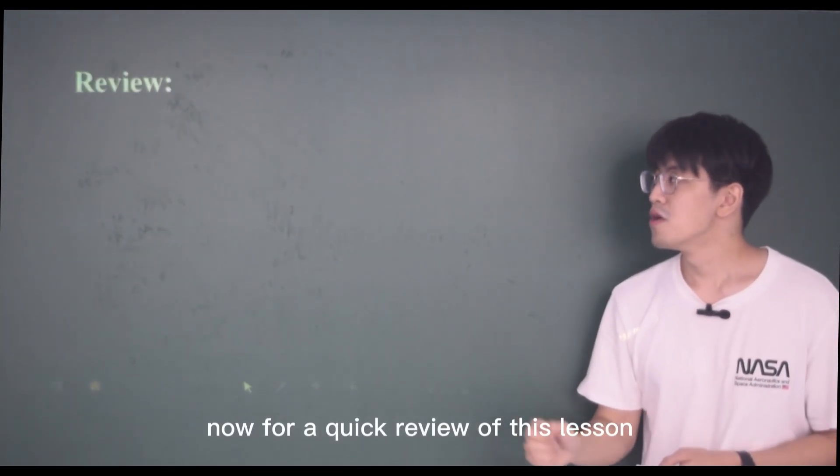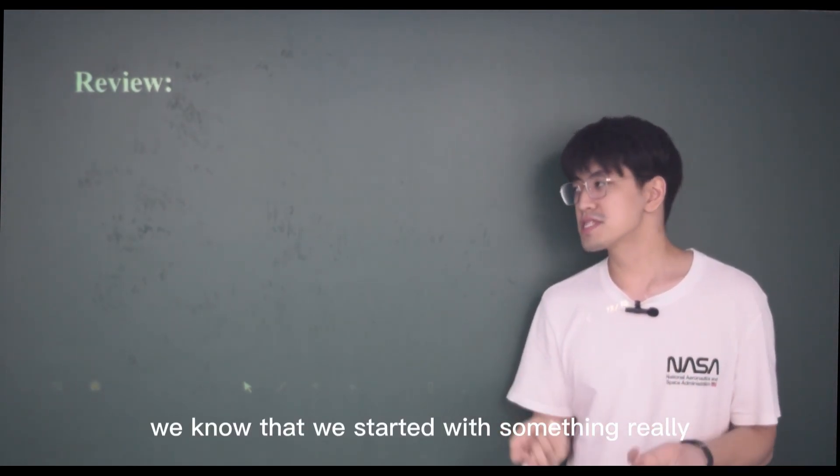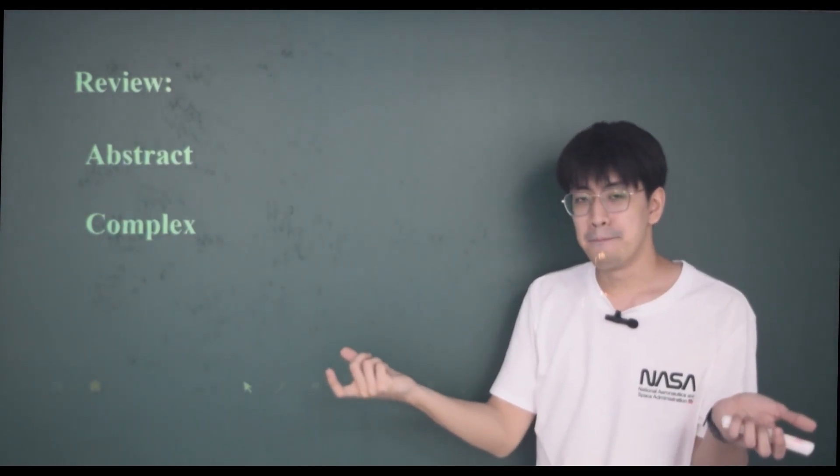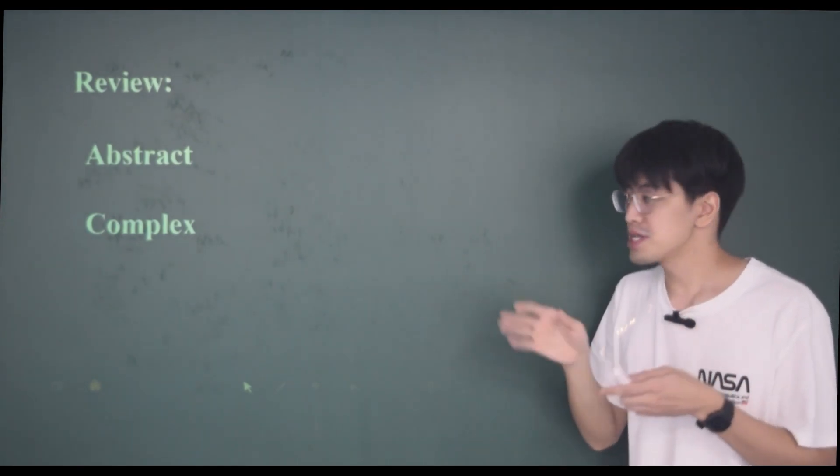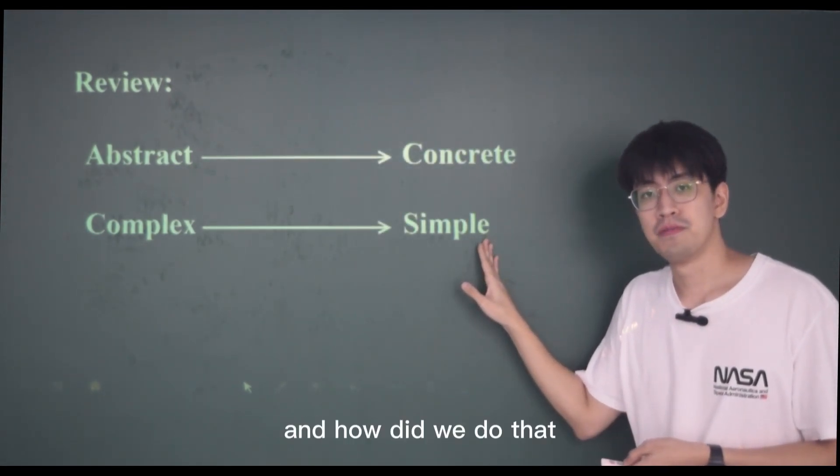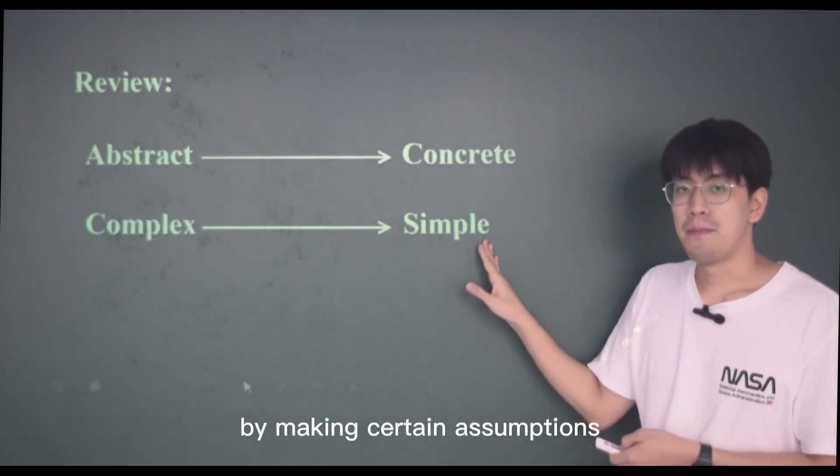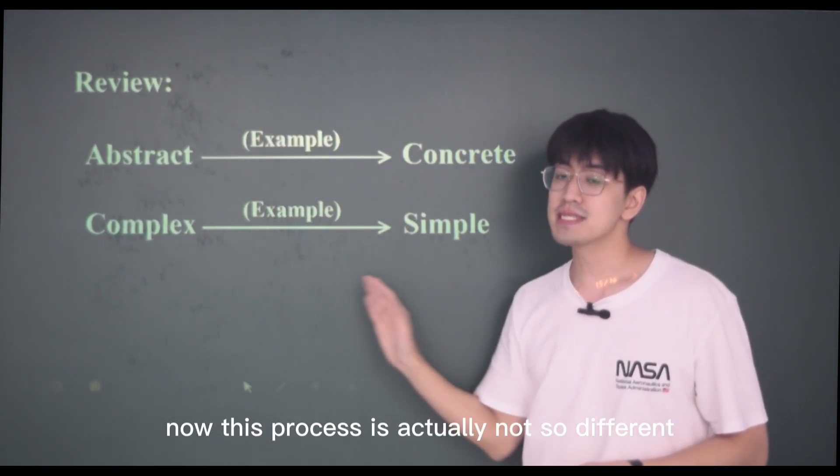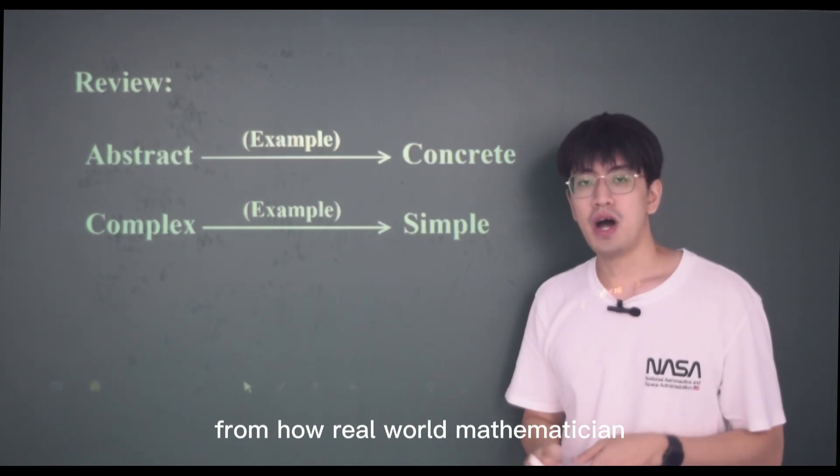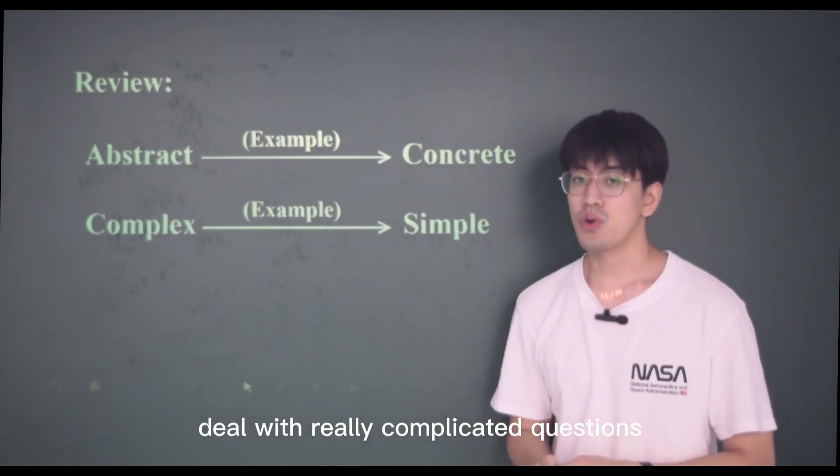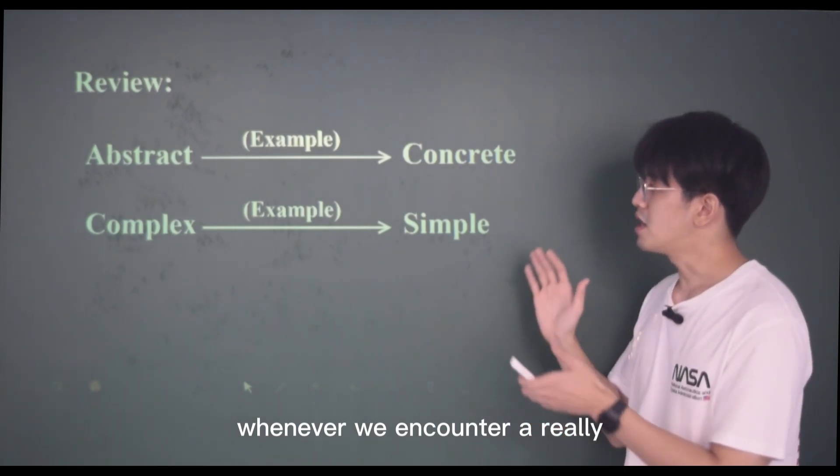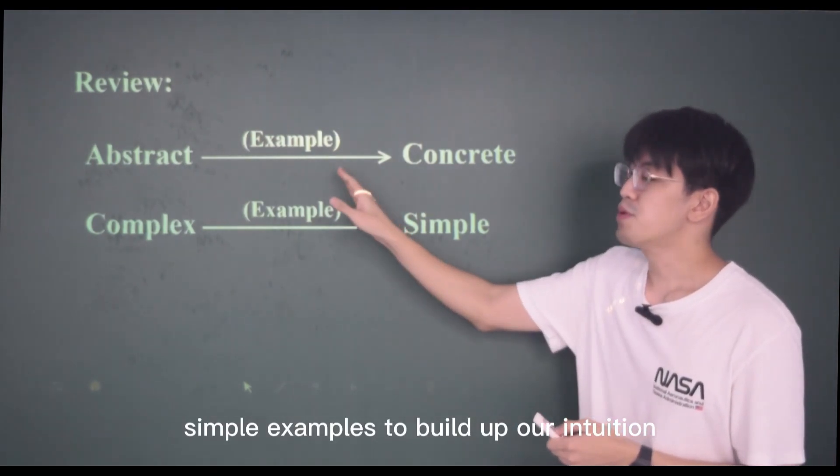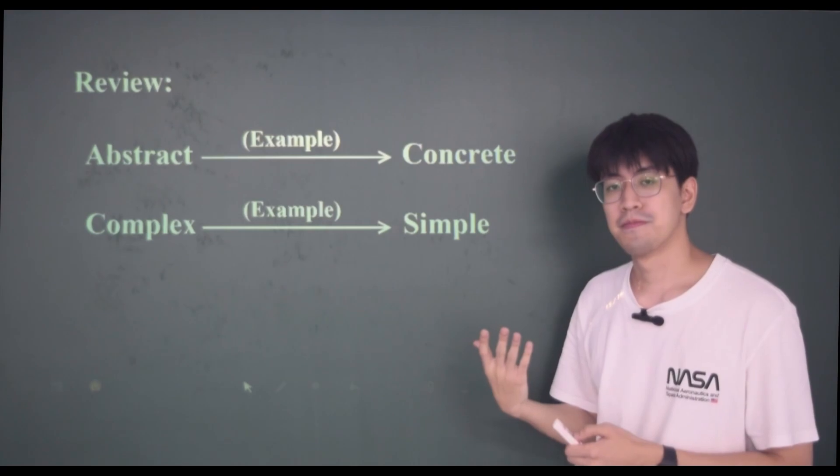Brilliant! For a quick review of this lesson, we know that we started with something really abstract and complex at first, with only the alphabet N and M. However, we managed to turn it into something really concrete and simple. And how did we do that? By making certain assumptions and look at simple examples. This process is actually not so different from how real-world mathematicians do with really complicated questions. Whenever we encounter a really abstract or complex question, we always try to find simple examples to build up our intuition.